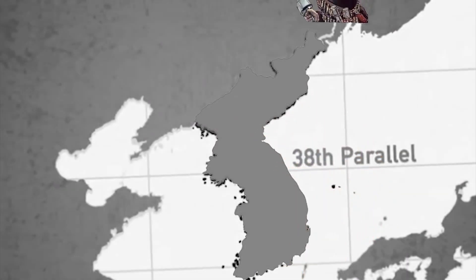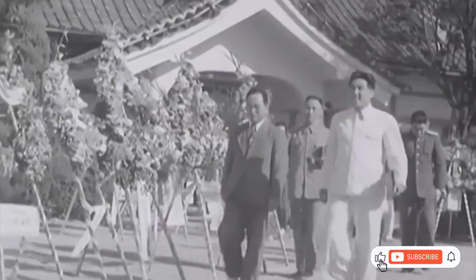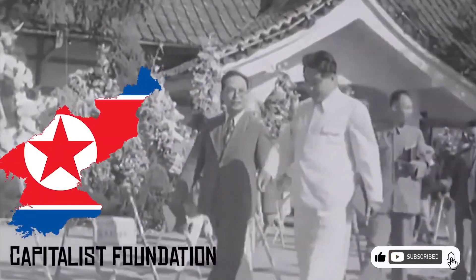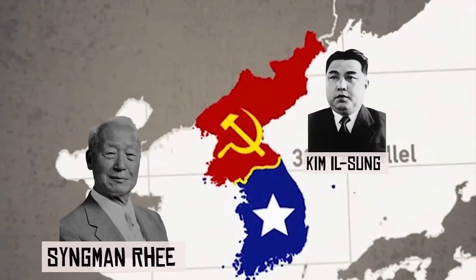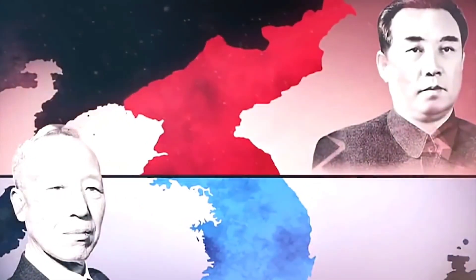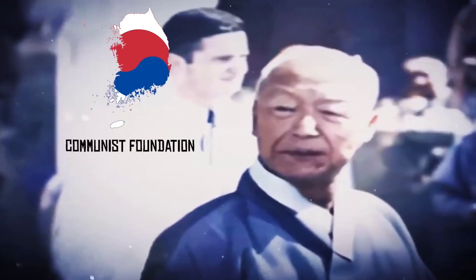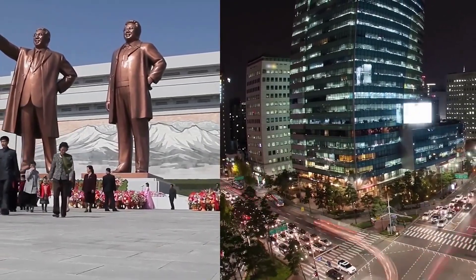This division was initially intended to be temporary, meant to facilitate the surrender of Japanese forces in Korea and the eventual establishment of a unified Korean government. However, as the Cold War intensified and ideological differences between the Soviet Union and the United States deepened, efforts to establish a unified Korean government failed. In 1948, separate governments were established — in the north under Soviet influence and in the south under American influence — leading to the formal division of Korea into North Korea, the Democratic People's Republic of Korea, and South Korea, the Republic of Korea. This was further solidified by the outbreak of the Korean War in 1950, when North Korea invaded South Korea, leading to a prolonged conflict that ended in a truce in 1953.